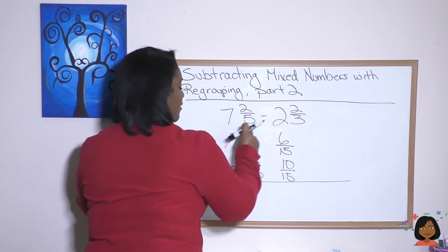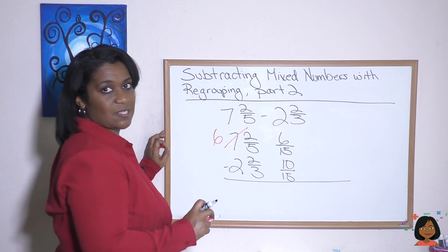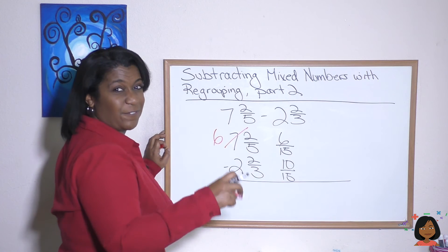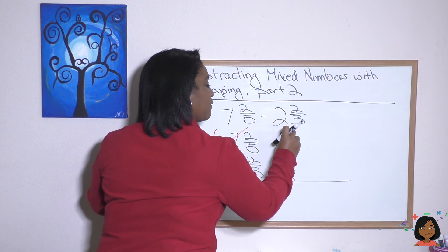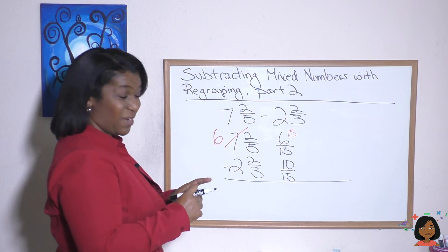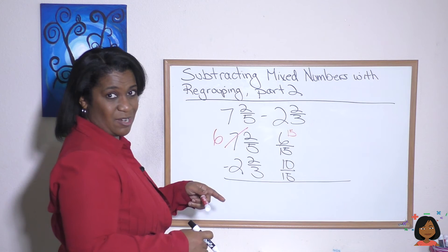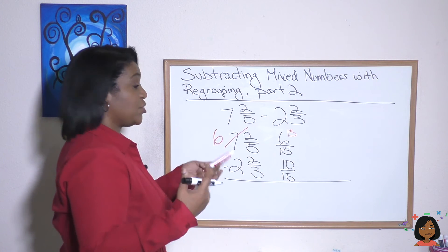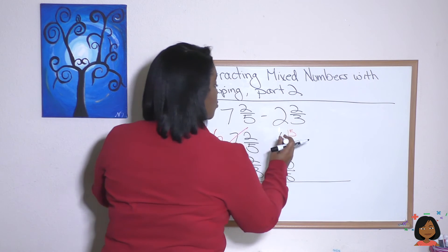So we're going to take this seven, change it over to a six. We're going to bring over 15 fifteenths. So I'm going to write my little 15 here. But I already have six that is here. So I'm going to add my 15 to my six. And that's going to be 21.